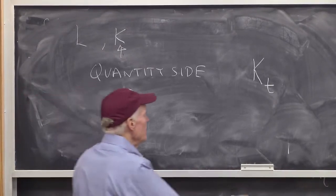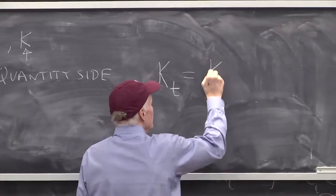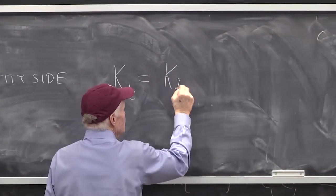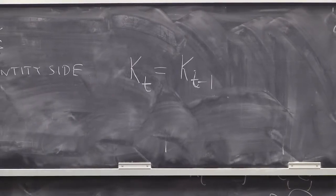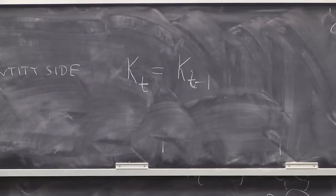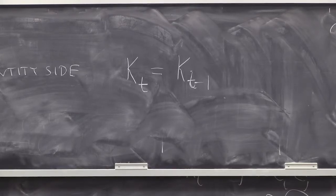The amount of assets we have at day T is the amount we had at T minus one. That's what it means that these assets are durable - the assets we already had yesterday carry over to today.